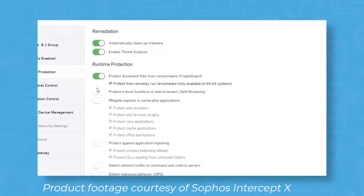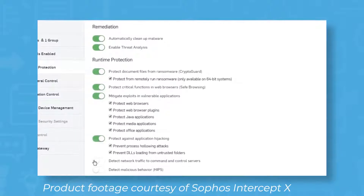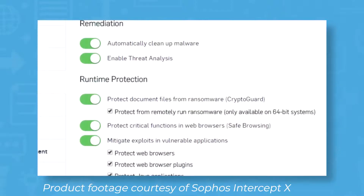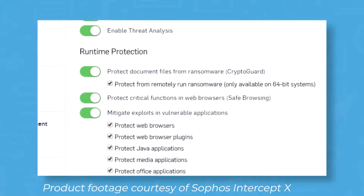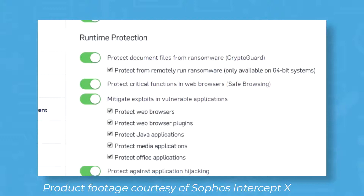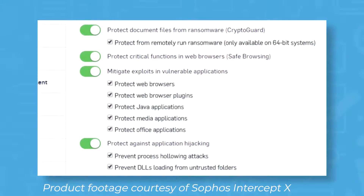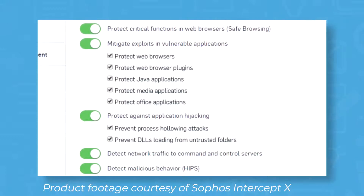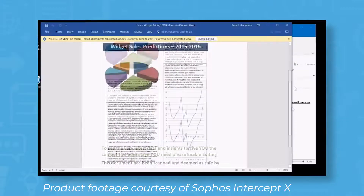Sophos Intercept X is a cybersecurity solution for both small and large businesses looking for a way to protect their confidential information from cyber attacks. The software uses advanced machine learning to detect and reject potential malware threats.